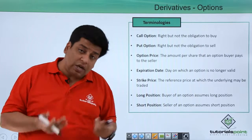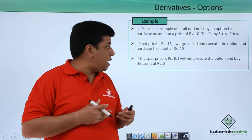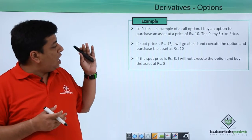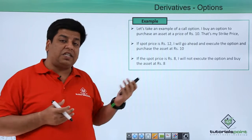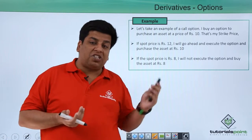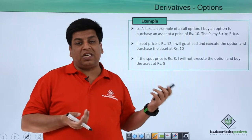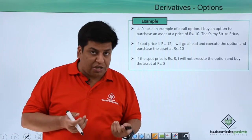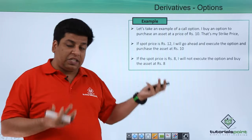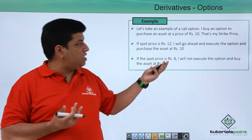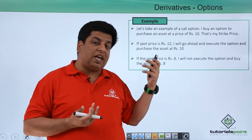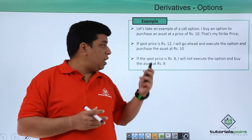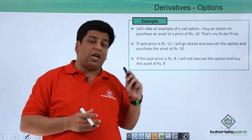Let's understand this with an example of a call option. Say I am buying an option to purchase an asset at rupees 10 — that will be my strike price. Since there is no counterparty risk, it is exchange-traded. So I have agreed to purchase the asset at rupees 10, meaning I have the right to purchase at 10 but I am not obliged to purchase at 10.